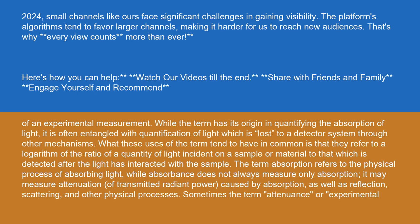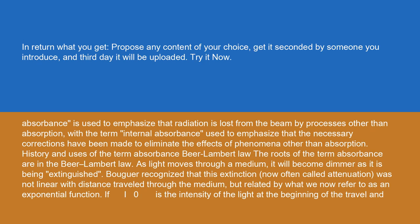Sometimes the term attenuance is used to emphasize that radiation is lost from the beam by processes other than absorption, with the term internal absorbance used to emphasize that the necessary corrections have been made to eliminate the effects of phenomena other than absorption.